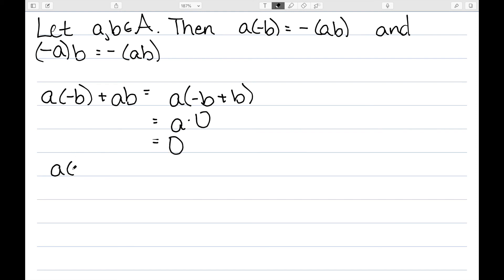So now I have A times negative B plus AB equals 0. And by the second condition that I had when I was relating this to groups, my identity property, that tells me that A times negative B equals negative AB. And similarly, we can get this second condition.